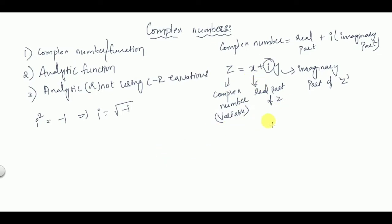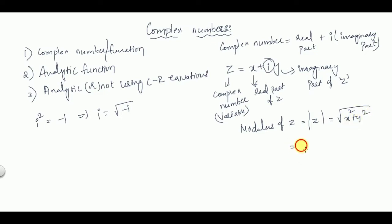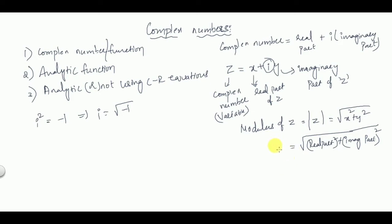This is in Cartesian form. If you want to find the modulus of z, represented by mod z, it is √(x² + y²) — that is the square root of the real part squared plus the imaginary part squared. This gives the modulus or magnitude of z.